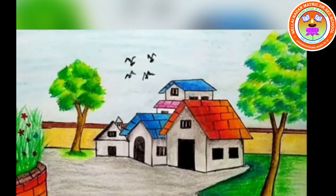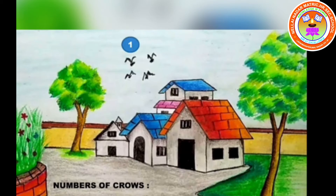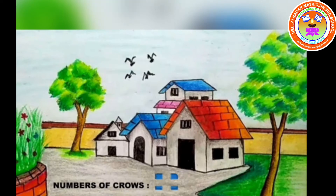Look at this picture. There are rows and trees here. Now we count the number of rows. How many rows are there? 1, 2, 3, 4 — there are 4 rows. How many trees are there? 1, 2 — there are 2 trees.